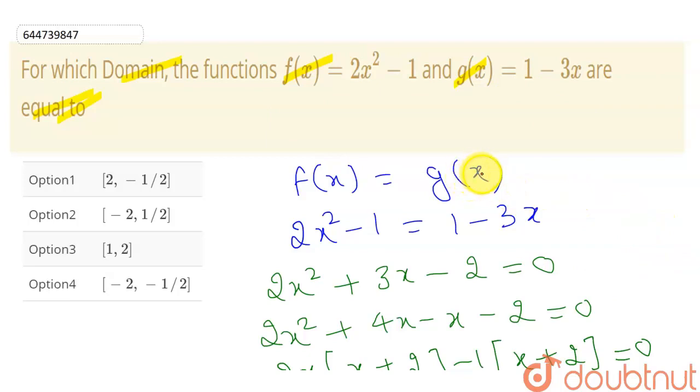So my answer is 1 by 2 comma minus 2, which is option 2. At these two values, these two functions are equal. So hope you understand the solution. Thank you.